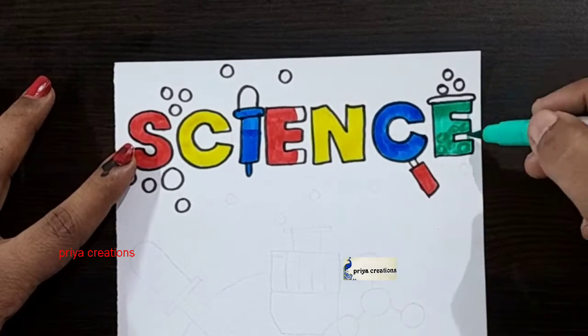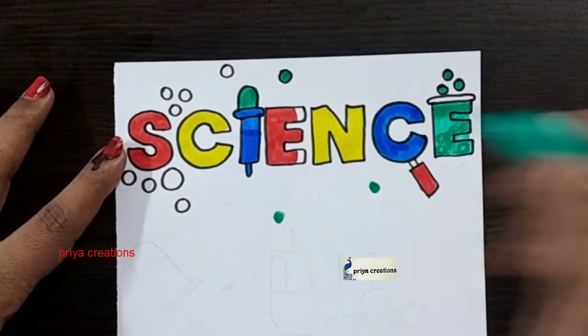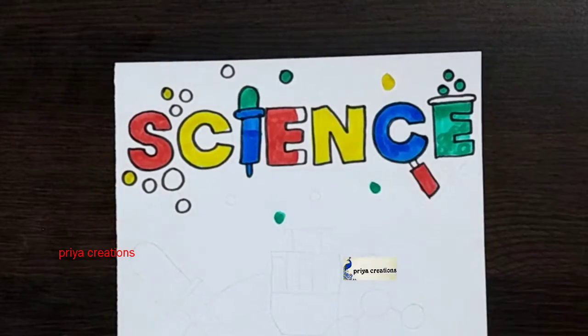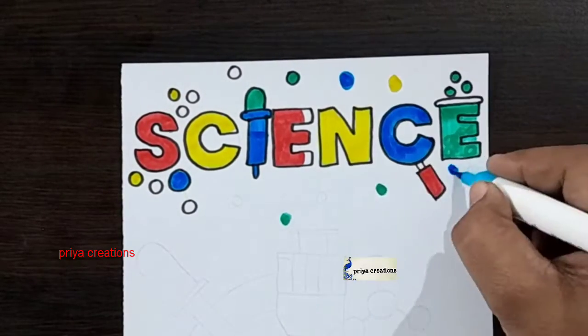Draw the round shape like this. Now I am using yellow color brush pen. Here I am using light blue color brush pen.